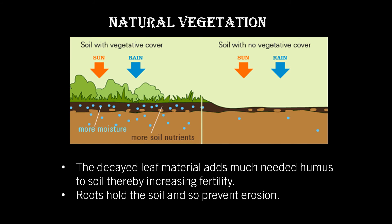Natural vegetation is also a very significant factor in determining soil formation. The decayed leaf material adds the much-needed humus to soil, thereby increasing its fertility. Roots hold the soil and prevent erosion. Wherever there is vegetative cover, there will be more moisture in the land and more nutrients. Areas which do not have vegetative cover will not lead to the absorption of moisture, and so the soil nutrients will also be very less. All these factors play a very important role in determining soil formation.